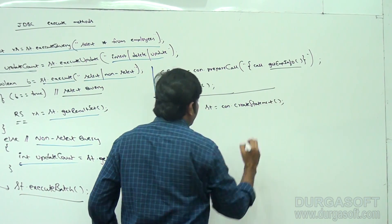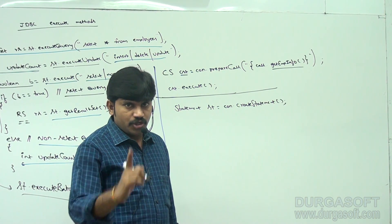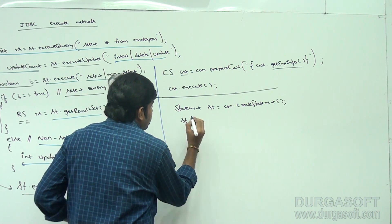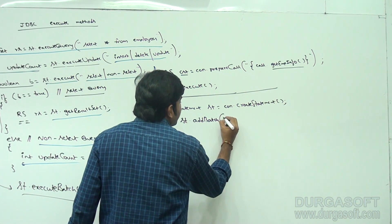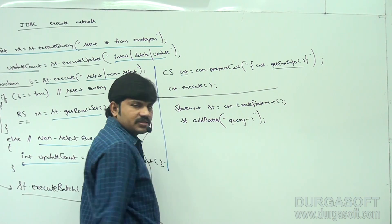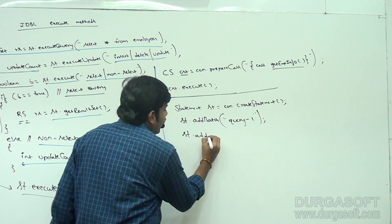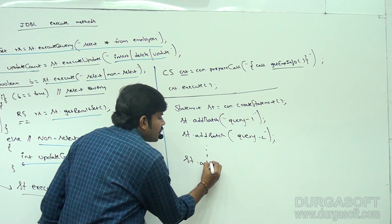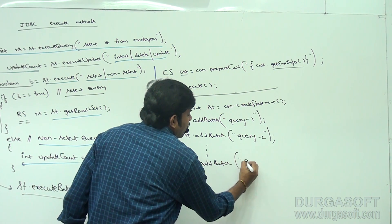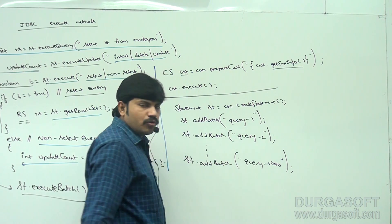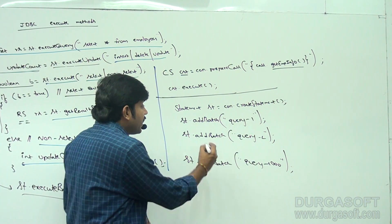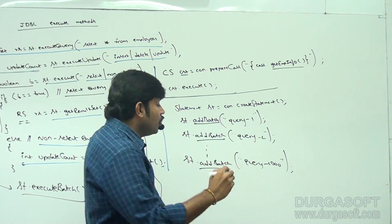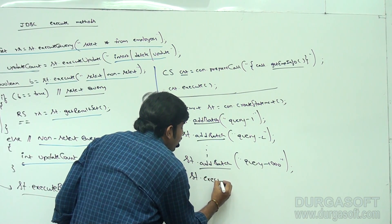Instead of sending those thousand SQL queries one by one to the database, I add them to a batch: st.addBatch(query1), st.addBatch(query2), and so on up to st.addBatch(query1000). All thousand queries are added to the batch. Then to execute this batch of SQL queries, I call st.executeBatch(). All thousand queries are sent to the database at once, executed one by one by the database engine, and the total result is returned at once.